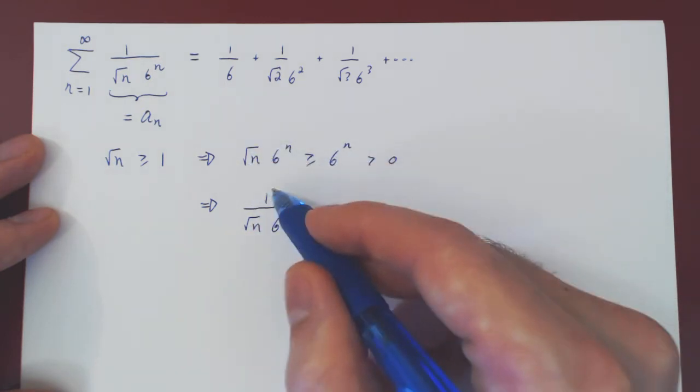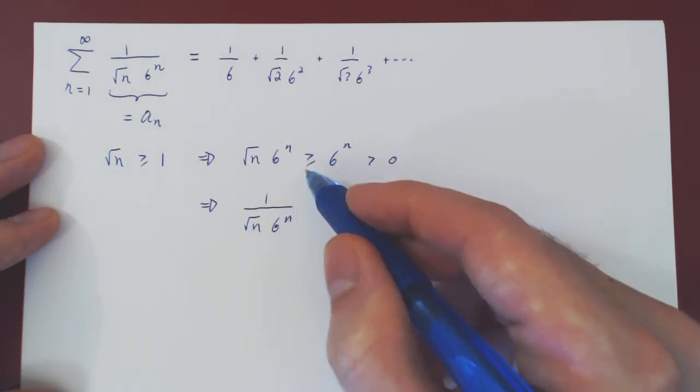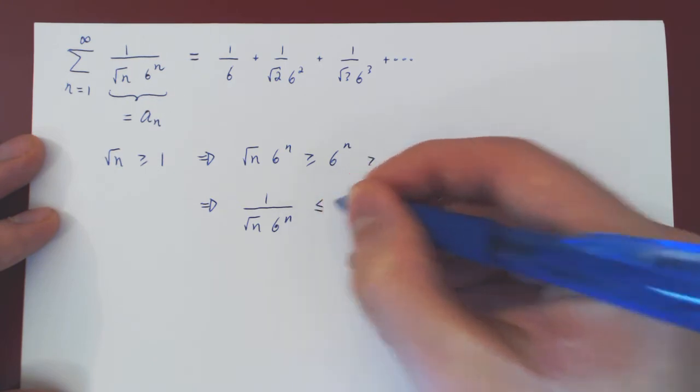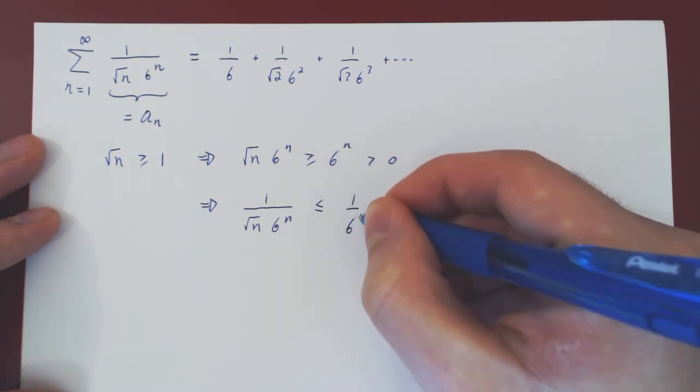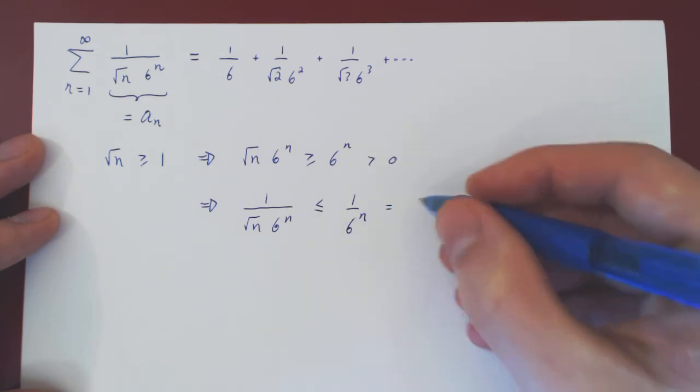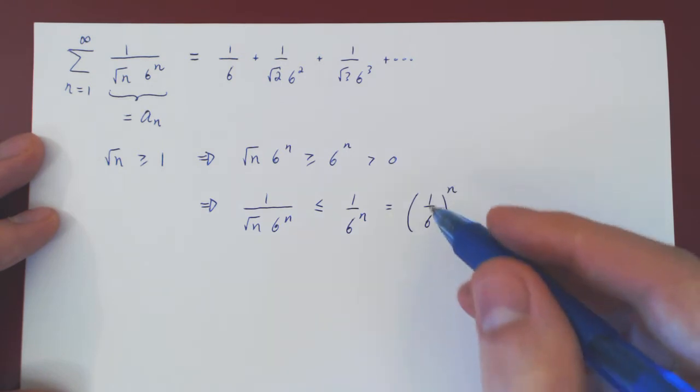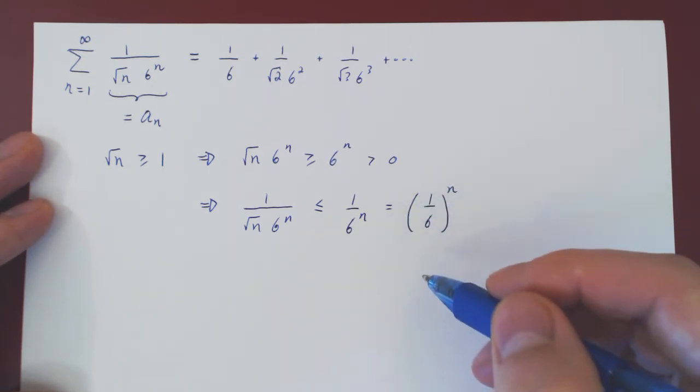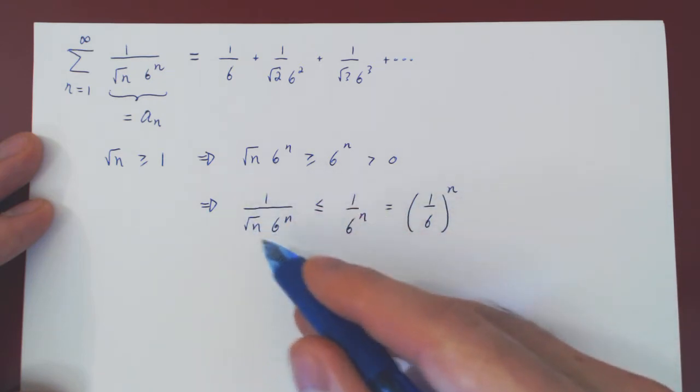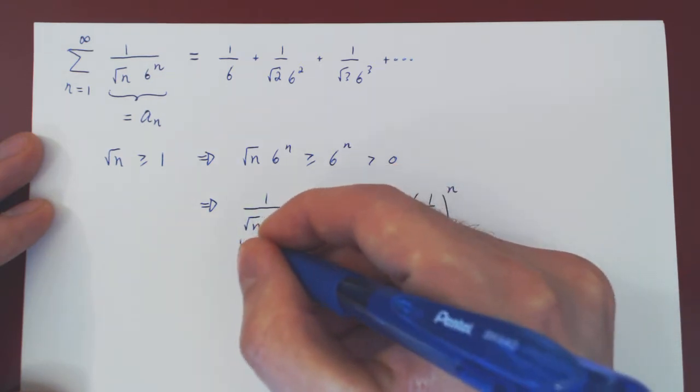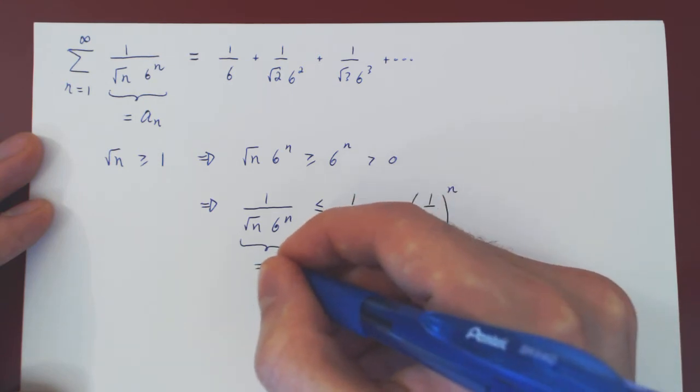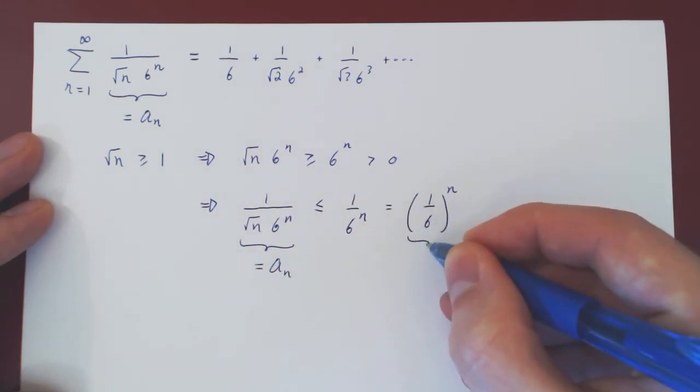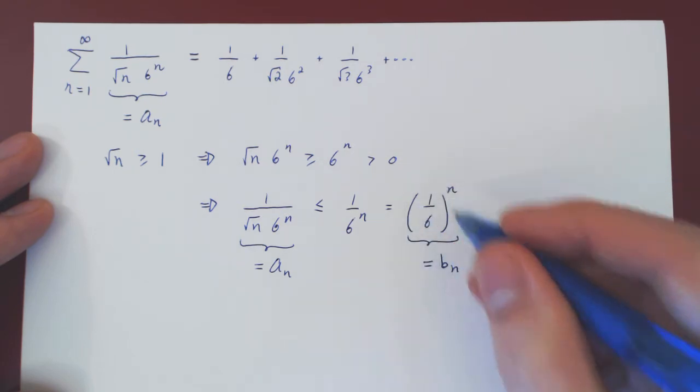If this term is bigger than this one, then 1 over something bigger will be smaller than 1 over 6 to the n. And as I've just said, we can write this as 1 over 6 to the n. And now we have a simple geometric sequence, and this is now our b_n, our simpler sequence. This is the sequence a_n, the original sequence we're trying to sum over. This is now the new, much simpler sequence, as it is a geometric sequence.